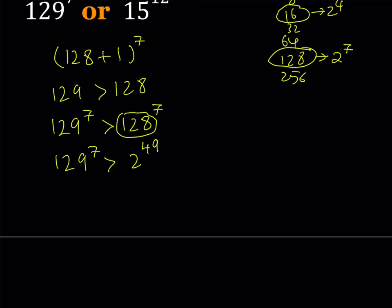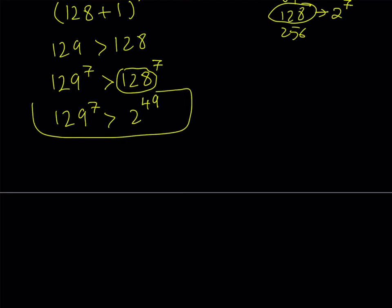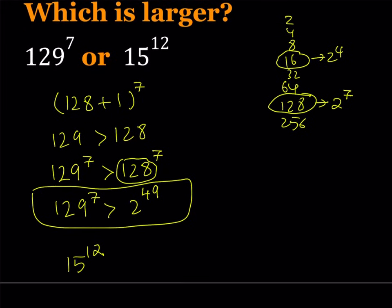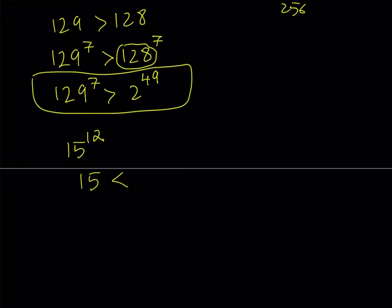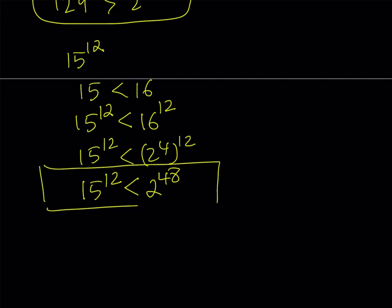On the other hand, I want to start off with 15 to the power of 12 and be able to compare to something else. As I said earlier, 15 is 1 less than 16, which is 2 to the 4th power. So I can safely say that 15 is less than 16. Therefore 15 to the power of 12 is also going to be less than 16 to the power of 12. But 16 is 2 to the 4th power, so I can write the 16 as 2 to the 4th to the power of 12, which can be written as 2 to the power of 48. So in other words, 15 to the power of 12 is always going to be less than 2 to the power of 48. And that is the other inequality that I would like to use.